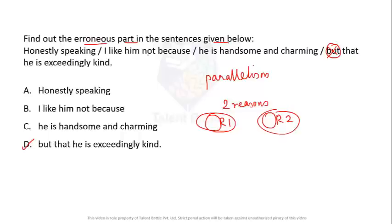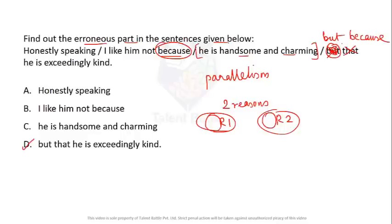For example, 'I like him not because he is handsome and charming' — 'because' is used here to give the reason. So after 'but,' the word 'that' is wrong. It should be 'but because he is exceedingly kind,' matching the format of the first reason.